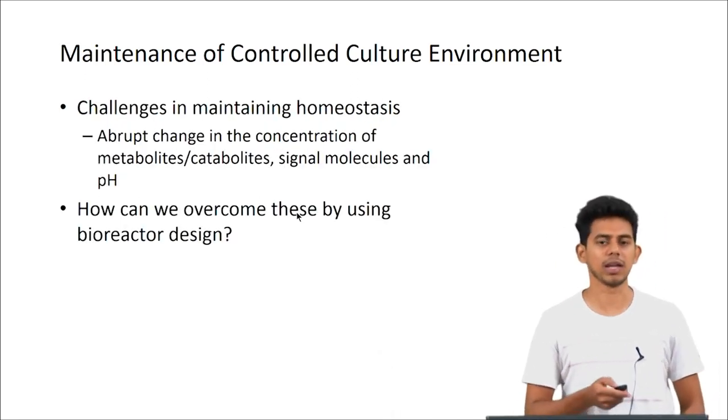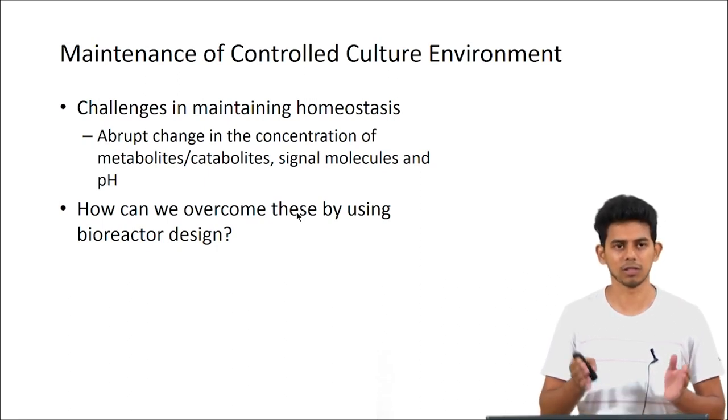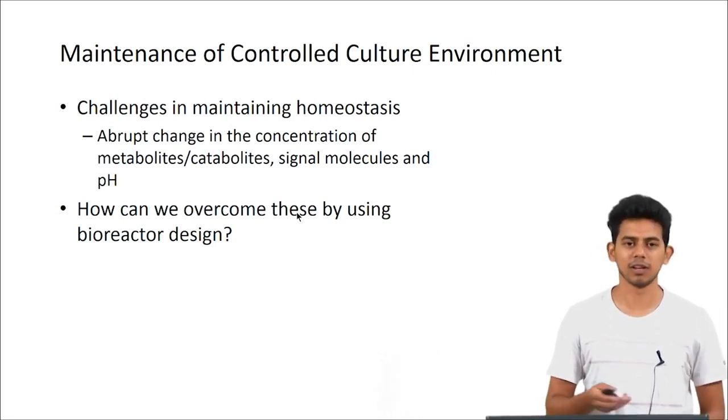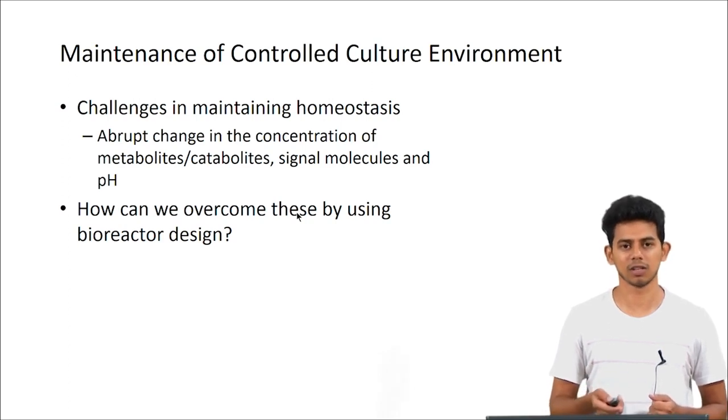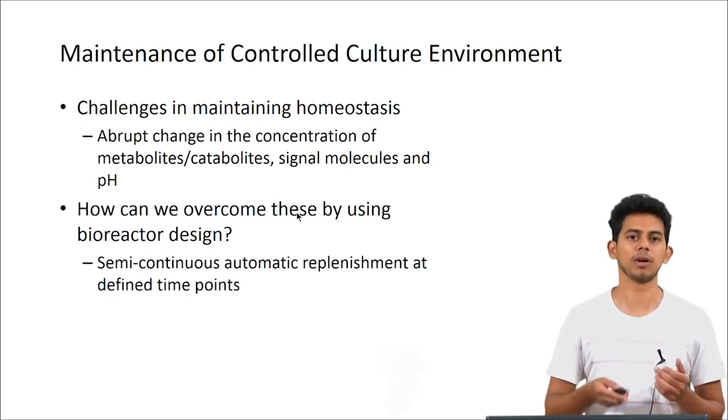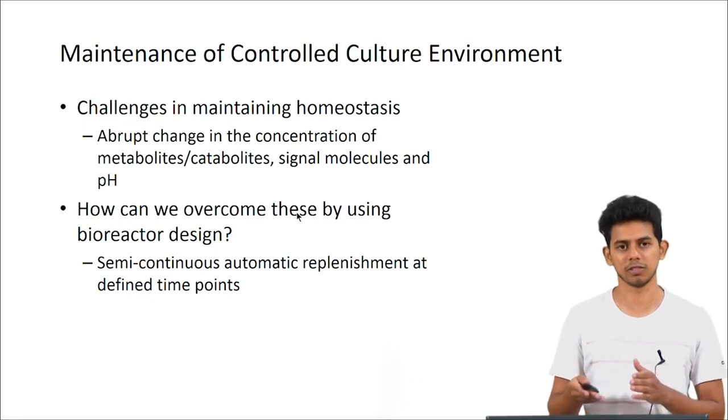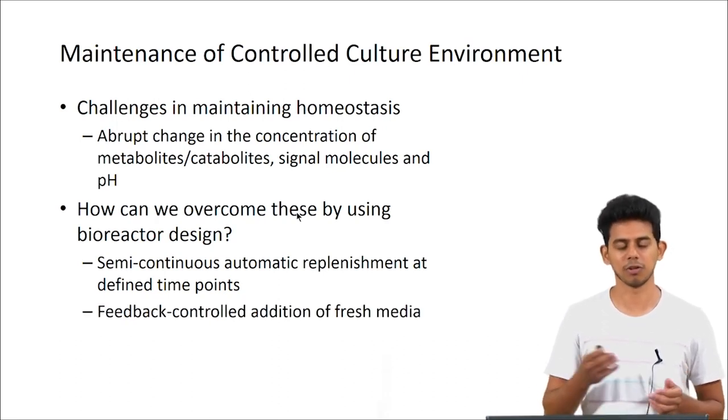The challenges in maintaining homeostasis are abrupt changes in concentration of metabolites and catabolites. This happens especially in a lab culture environment. This can be overcome in a bioreactor by using a semi-continuous or automatic replacement, so there is not a huge and sudden change in the metabolites or the catabolites during the reaction. You can also use a feedback controlled addition of fresh media.